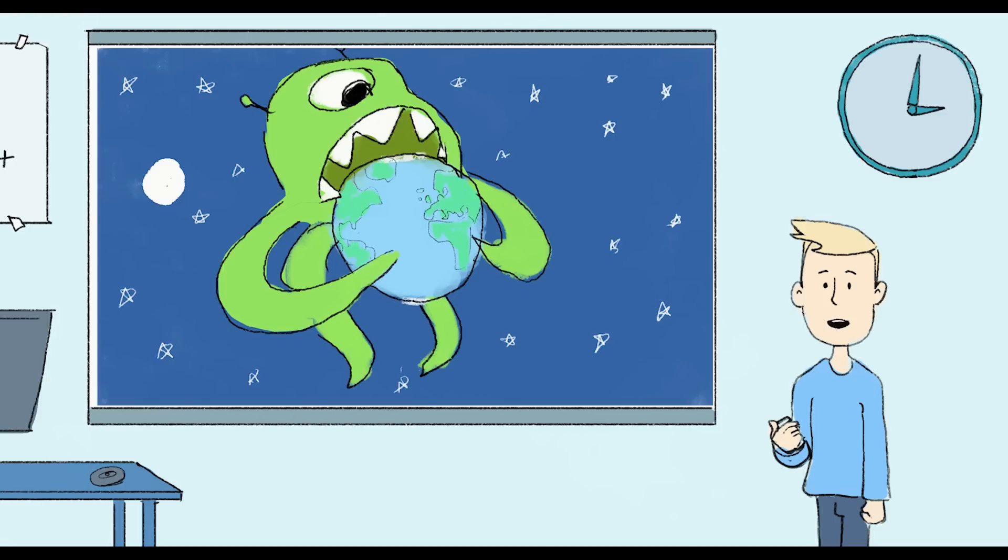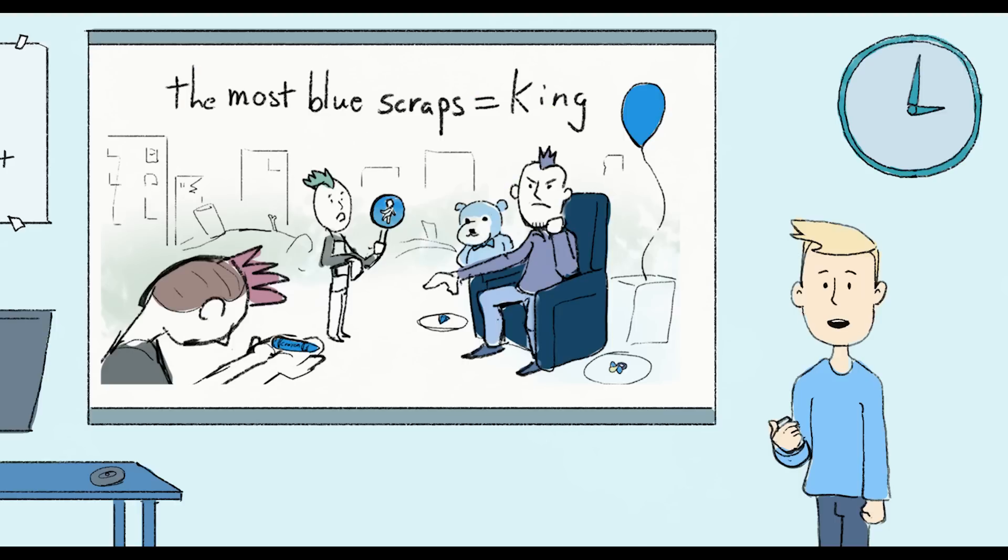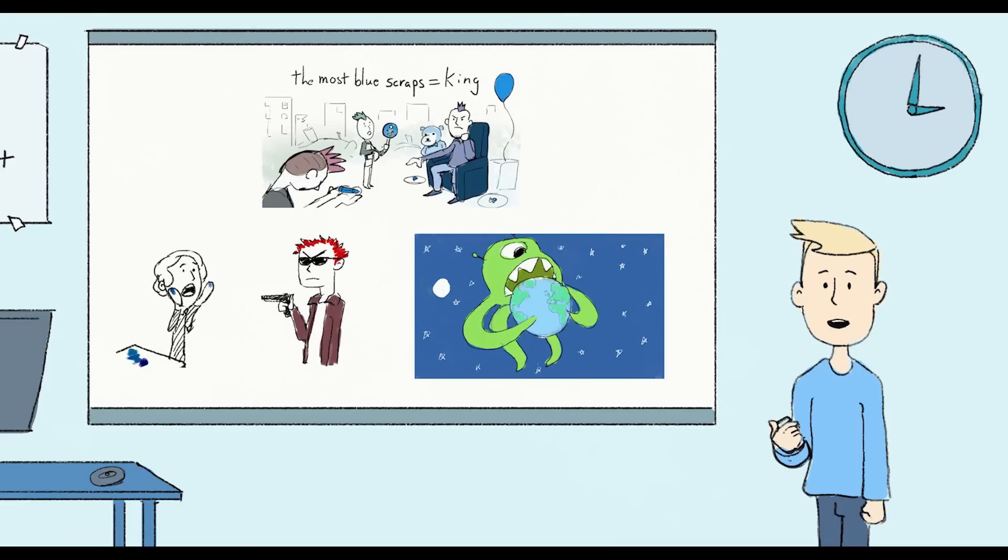Did aliens invade the planet and reap everything blue as a resource? Did the aftermath of the post-apocalypse cause people to forget how to make blue? Yes. All those things happened. But it's not the reason why the color blue disappeared.